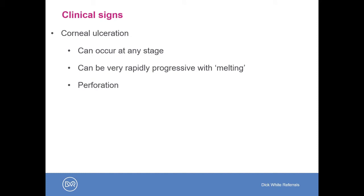Corneal ulcers are particularly common and can sometimes mask dry eye — when you have a corneal ulcer, the ulcer is painful and you get an upregulation of tears. So it's very important that even if there is not a diagnostic Schirmer tear test reading in the presence of corneal ulceration, this is repeated later when the corneal ulcer has fully healed. Corneal ulcers can be very rapidly progressing and become complicated — so-called melting — and if this happens they can progress to perforation of the globe, putting the eye at risk of being lost entirely.